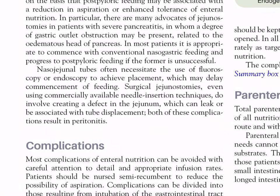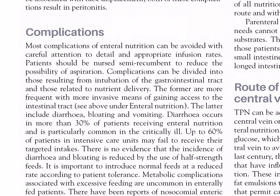Naso-jejunal tubes often necessitate fluoroscopy or endoscopy to achieve placement, which may delay commencement of feeding. Surgical jejunostomies, even using commercially available needle insertion techniques, involve creating a defect in the jejunum which can leak or be associated with tube displacement; both complications result in peritonitis. Most complications of enteral nutrition can be avoided with careful attention to detail and appropriate infusion periods. Patients should be nursed semi-recumbent to reduce the possibility of aspiration. Complications can be divided into those resulting from intubation of the gastrointestinal tract and those related to nutrient delivery.